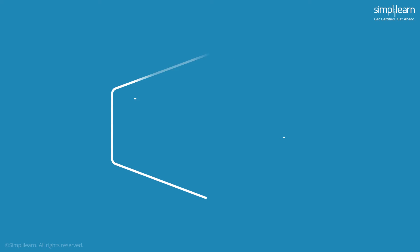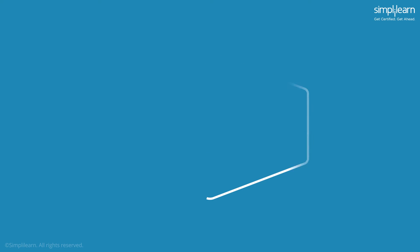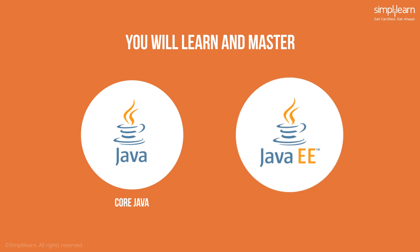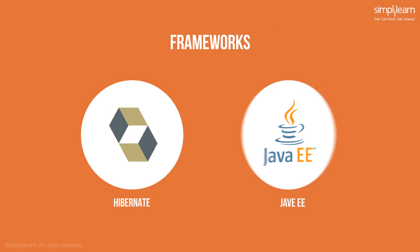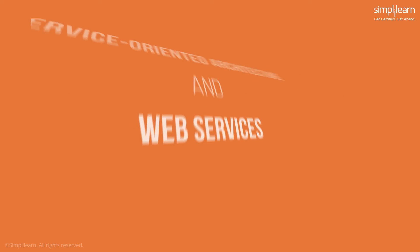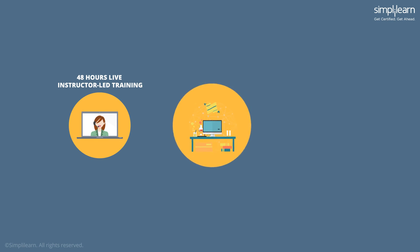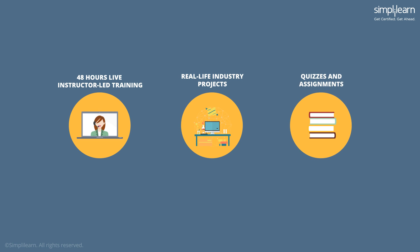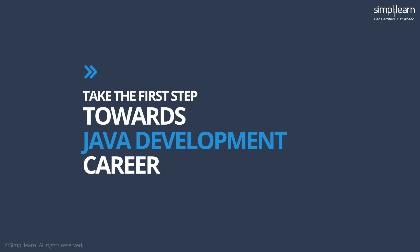With Simplilearn's comprehensive Java training you can. In this course you'll learn and master the basic and advanced concepts of core Java and Java EE, get acquainted with frameworks like Hibernate and Spring, and understand service-oriented architecture and web services. The training comes with 48 hours of live instructor-led online training, along with real-life industry project experience, quizzes, assignments, and more.